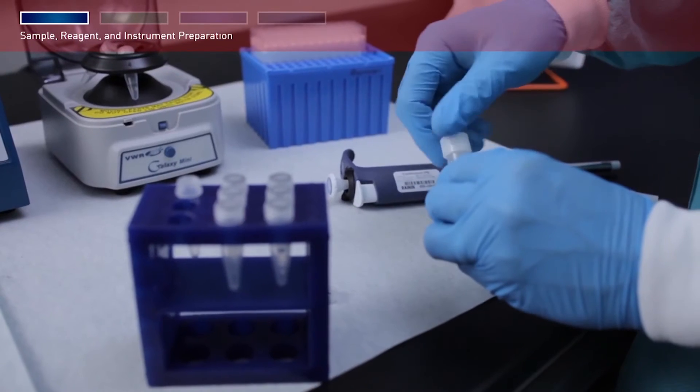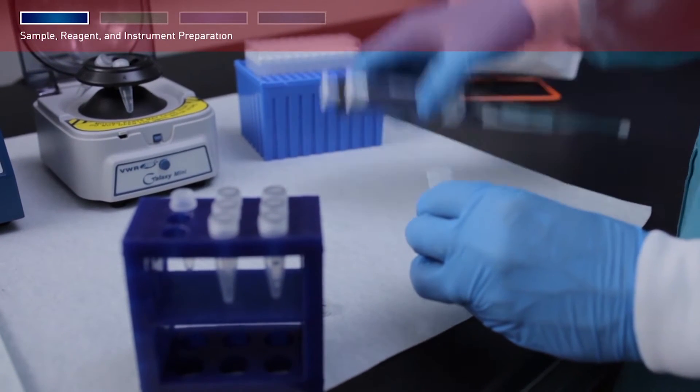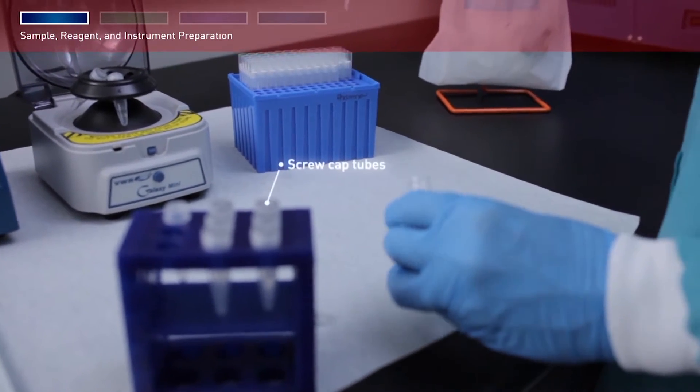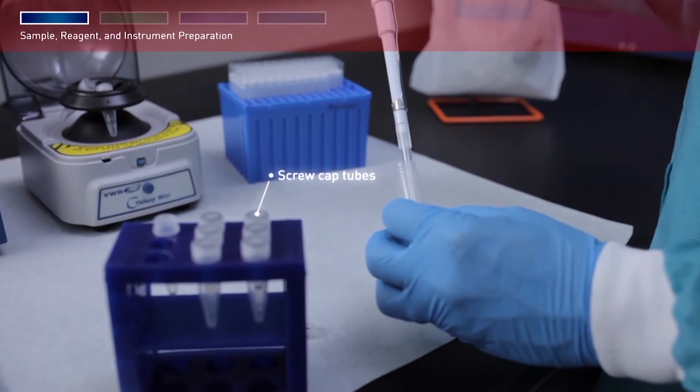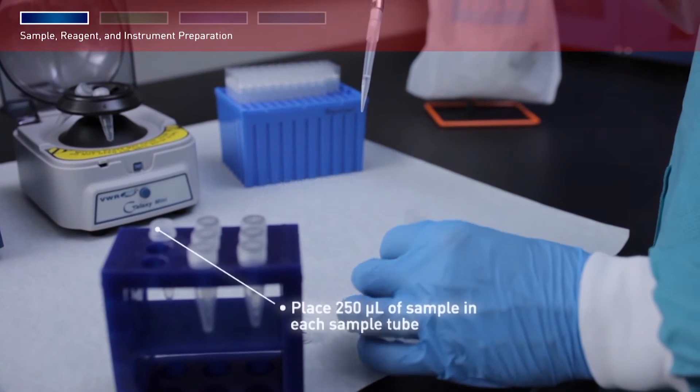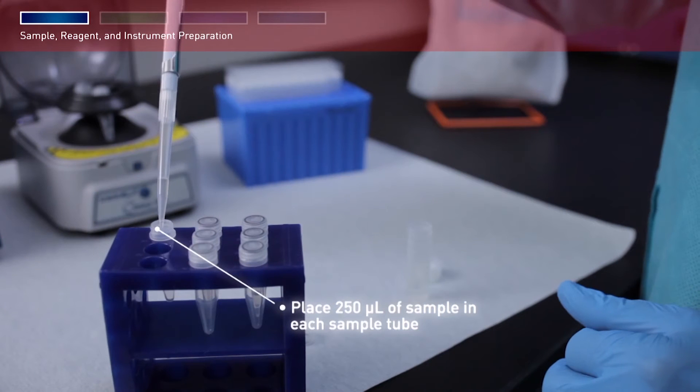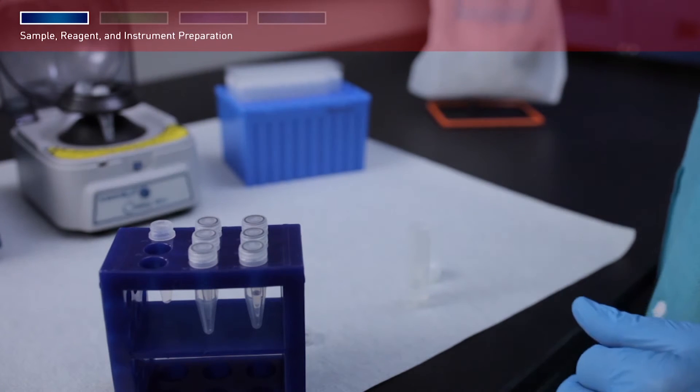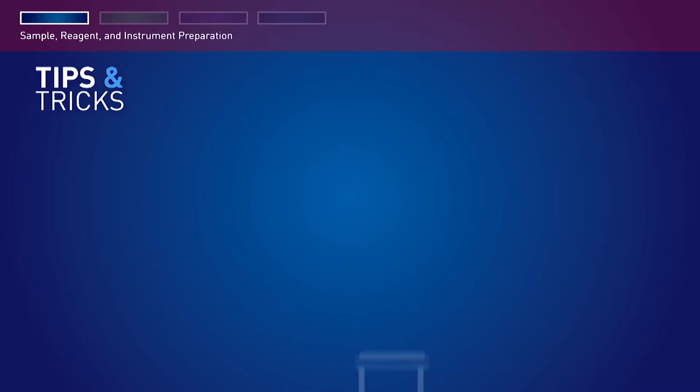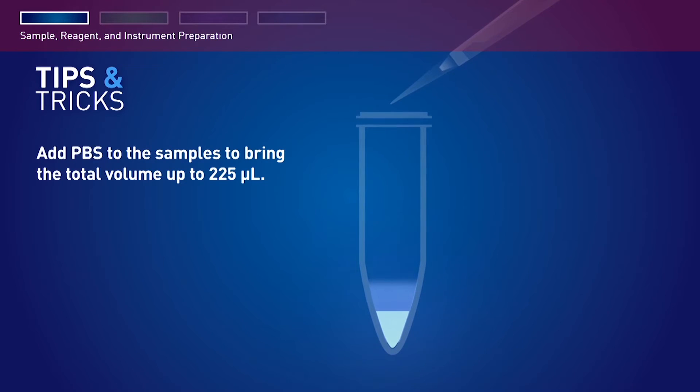After loading and inserting the cartridge rack and tip and tube rack, prepare samples in triplicate using screw cap tubes. Place 250 microliters of sample in each sample tube, up to 13 sample tubes in total. For samples that are less than 225 microliters, add PBS to the samples to bring the total volume up to 225 microliters.